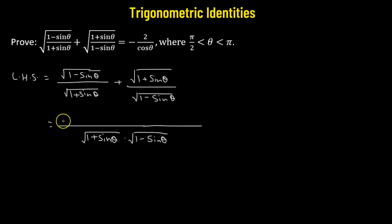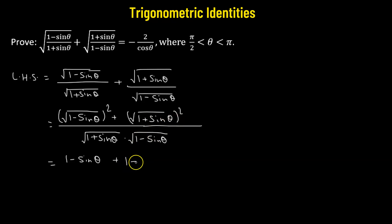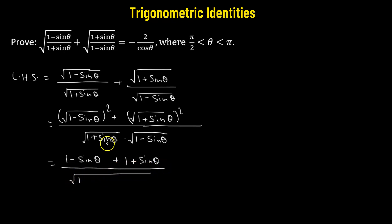In the numerator, we have square root of 1 minus sine theta whole squared added to square root of 1 plus sine theta whole squared. So let's further simplify: square root of 1 minus sine theta whole squared will be 1 minus sine theta, plus square root of 1 plus sine theta whole squared will be 1 plus sine theta, divided by the combined denominator of 1 plus sine theta multiplied by 1 minus sine theta.